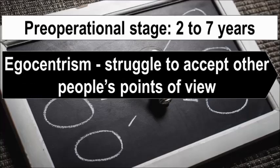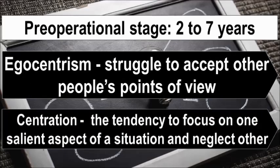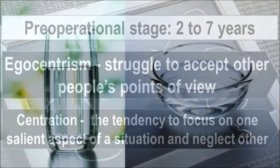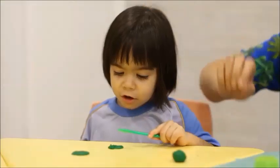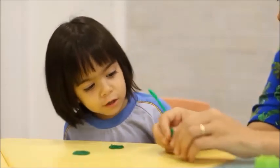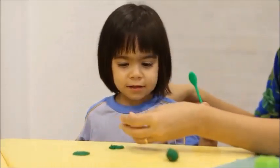This stage is also characterized by centration. For example, a child observes that water from a narrow glass poured into a shallow container may judge that the quantity of water decreases because it is lower — that is, the child attends to the height of the water but not the compensating increase in the diameter of the container. Additionally, the child believes that inanimate objects have lifelike qualities and are capable of action, which refers to animism.